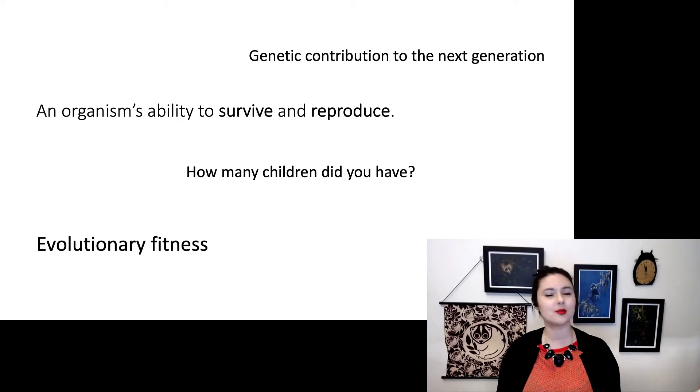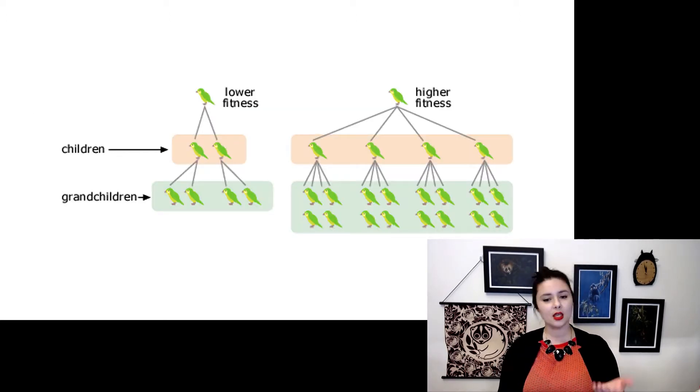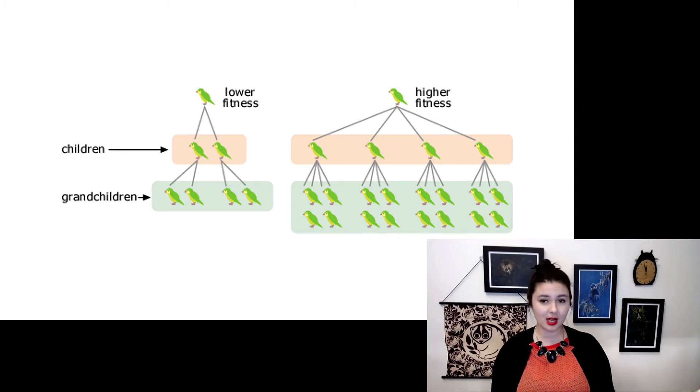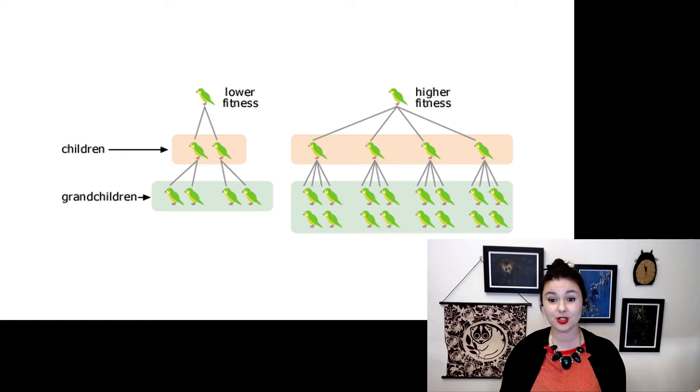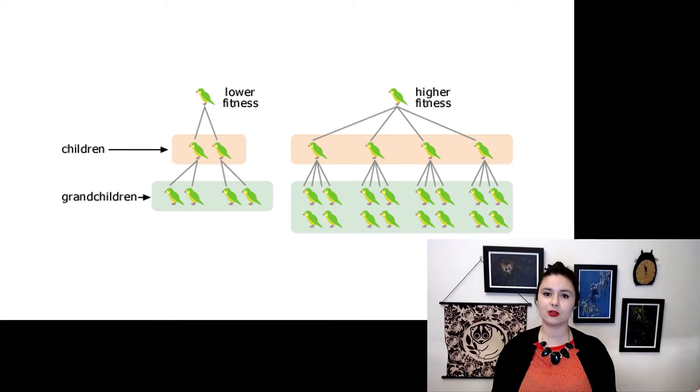But it always helps to look at some examples to help us understand. Here, we're looking at two birds. One has two children, while the other has four. If we see this same relationship in a second generation, by the grandchildren, one bird only has four grandchildren, but the other has sixteen. And if this goes on for more generations, this could lead up to a really big difference.